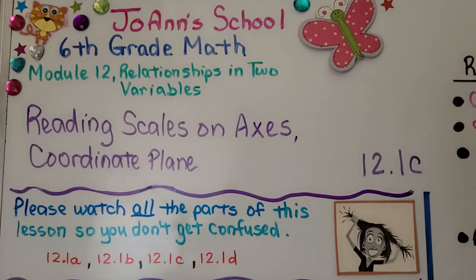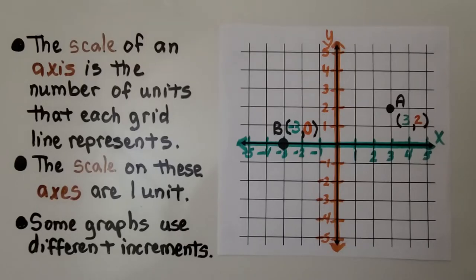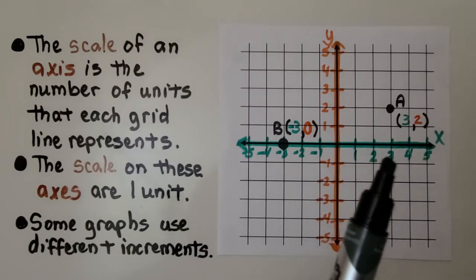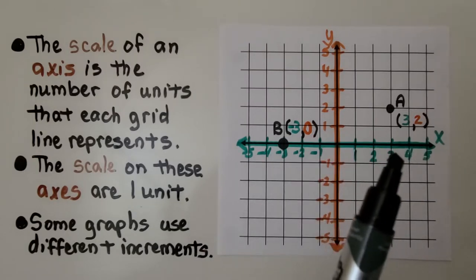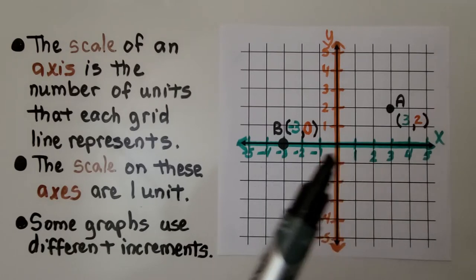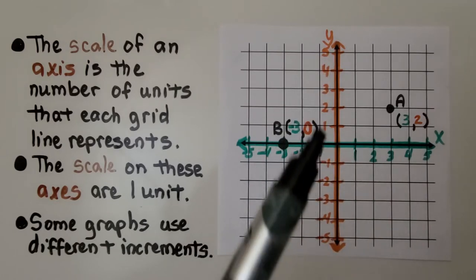Lesson 12.1c, Reading Scales on Axes, Coordinate Plane. Take a look at this coordinate plane, this grid. We see the numbers along here. This is the scale for x, and this is the scale for y.